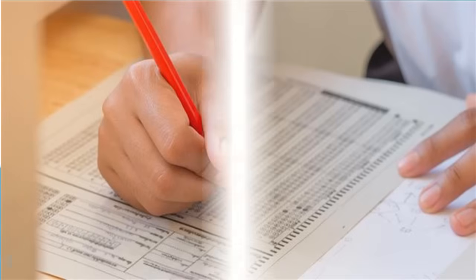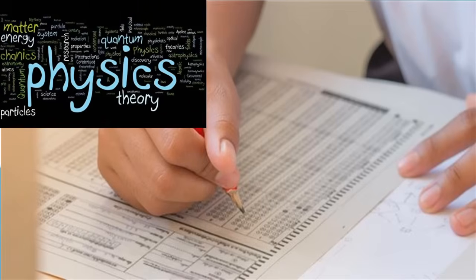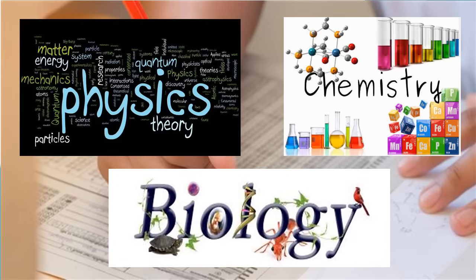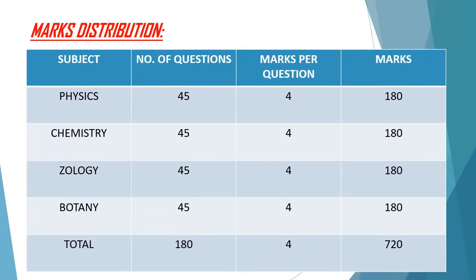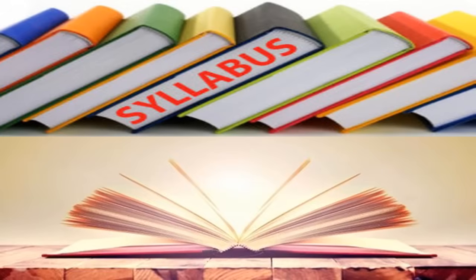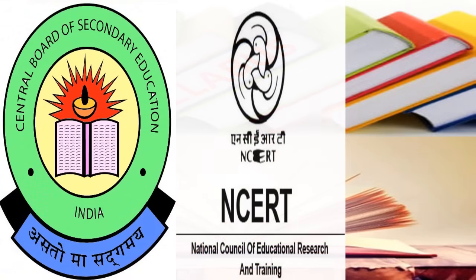The paper of NEET would be composed of 3 sections: Physics, Chemistry, and Biology. Physics and Chemistry consist of 45 questions each, and the Biology section contains 90 questions. 4 marks is awarded for each question, making a total of 720 marks. CBSE will prepare the question paper of NEET 2018. As per MCI, the NEET 2018 syllabus has been prepared after review of various state syllabi as well as those prepared by CBSE, NCERT, and COBSE.